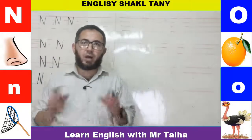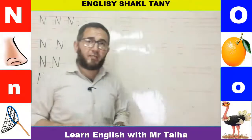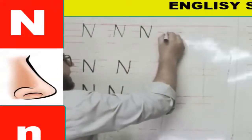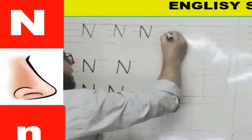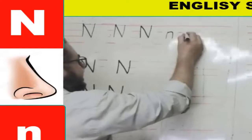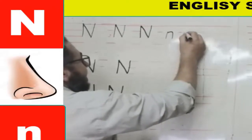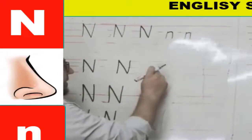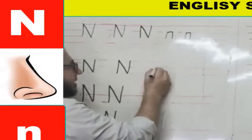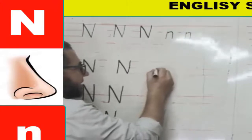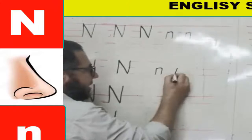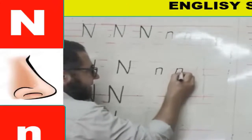Now for lowercase n — it's a very easy letter to write. On four lines, the small n sits between the second and third lines. I start at the second line, go down to the third line, then from the top make a curved line and go down again. On three lines, it sits between the second and third lines with the same stroke: straight down, curve at top, straight down.